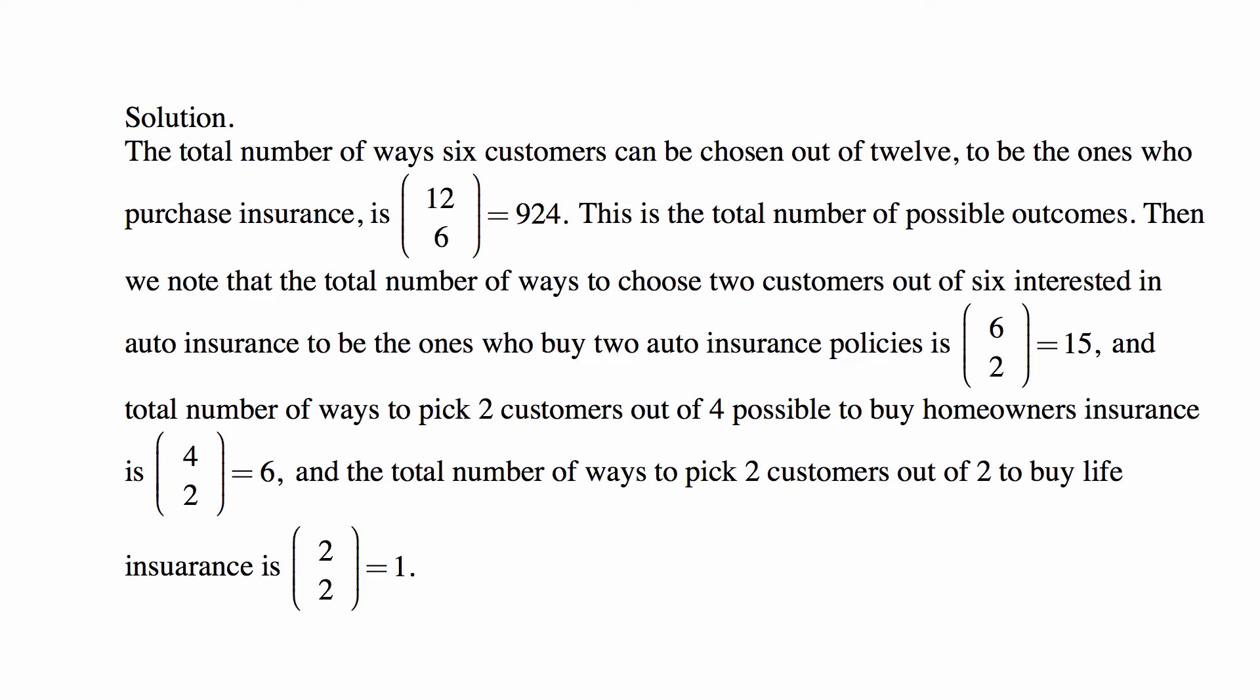Well, the total number of ways six customers can be chosen out of twelve, because there are twelve people and six of them buy. So how many ways can you get six people out of twelve? That's the number of ways to choose six elements out of twelve, which is twelve choose six, or 924.